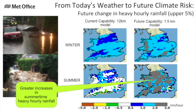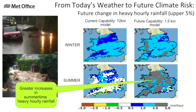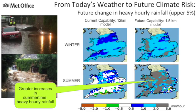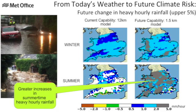On this figure, the left-hand column shows the current capability where the grid resolution of models used for climate change risk assessment is at the 12-kilometre scale, and the future capability exploits our kilometre-scale capability from weather forecasting but now within the climate change context.